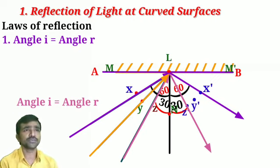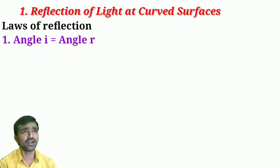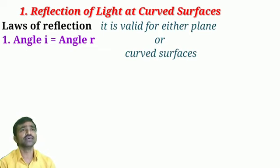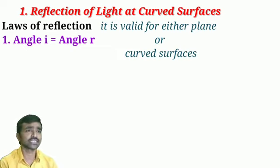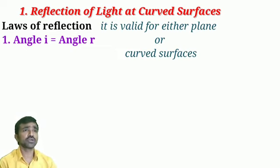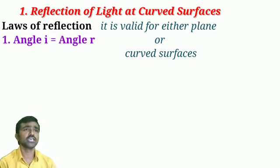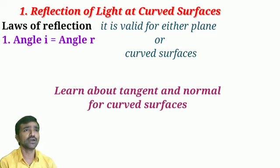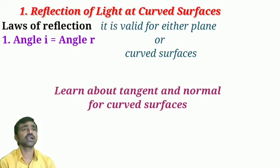You may ask whether the law of reflection is valid for any mirror. Yes, it is valid for any mirror — whether a plain surface or a curved surface — as long as the surface is smooth and polished. So angle of incidence equal to angle of reflection is verified. For spherical mirrors, you need knowledge about the tangent and the perpendicular drawn at the point of incidence, which I will explain in the next class. Thank you.